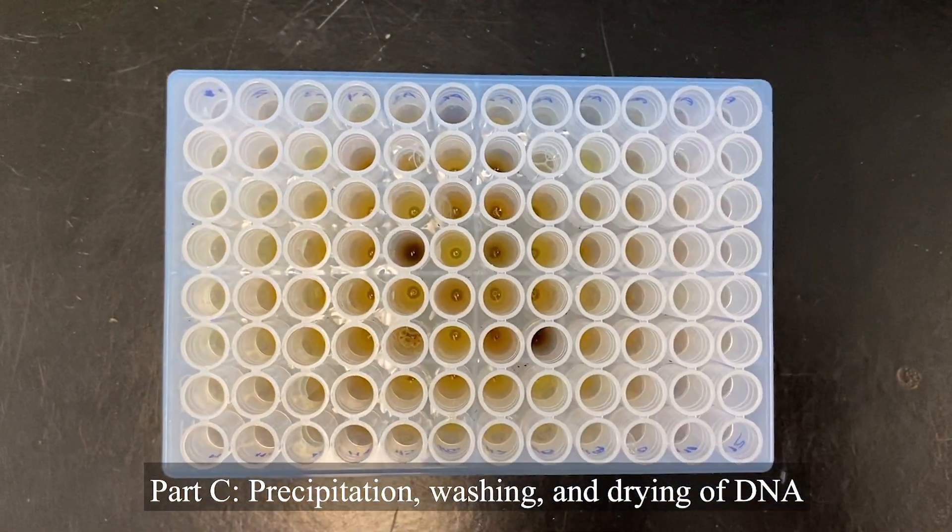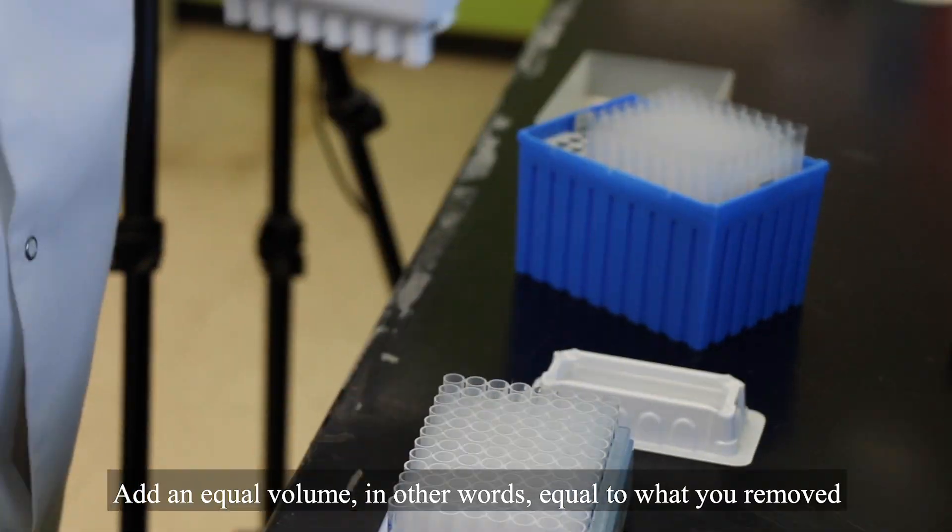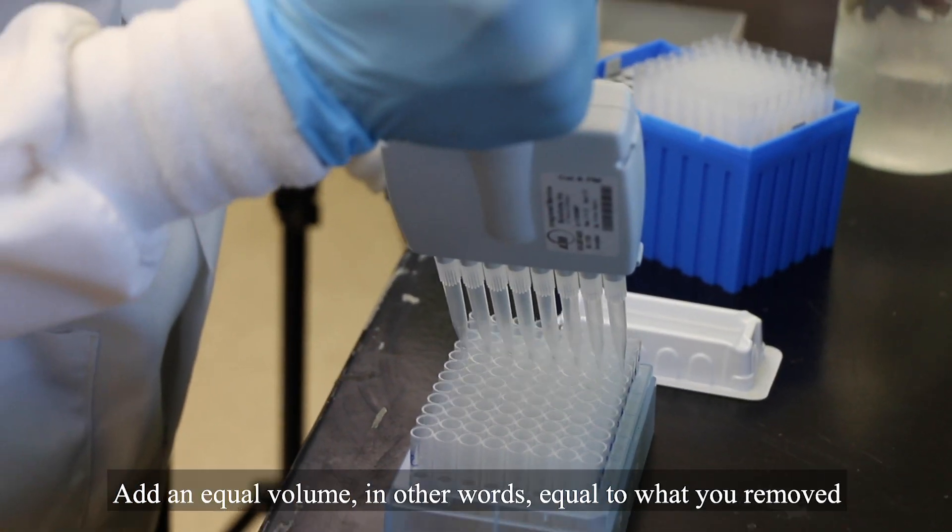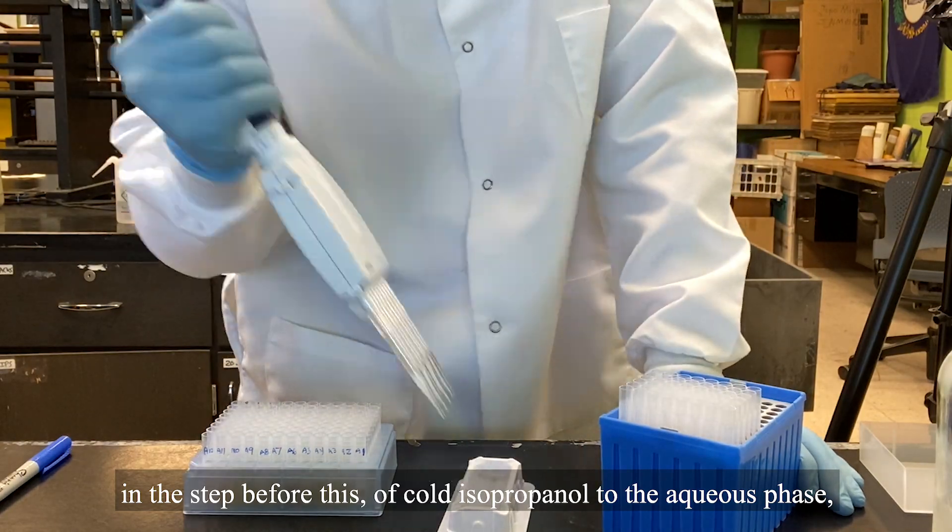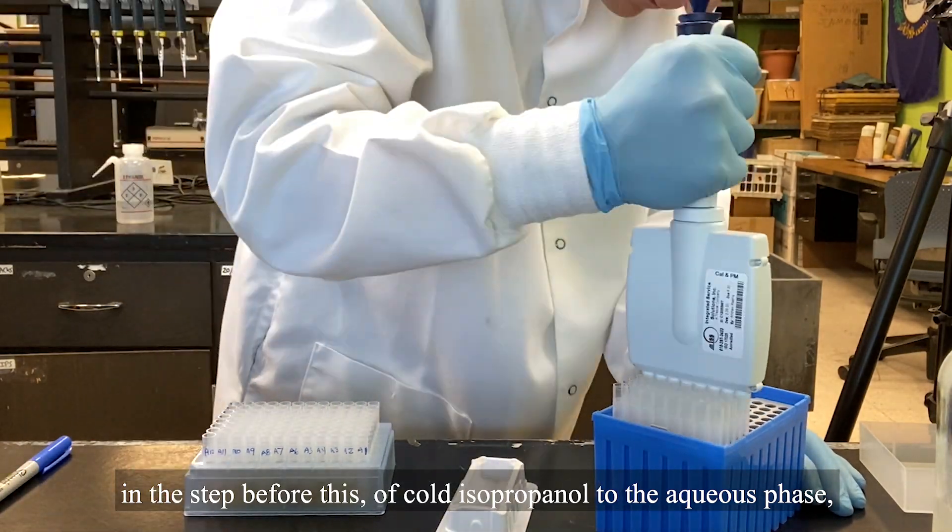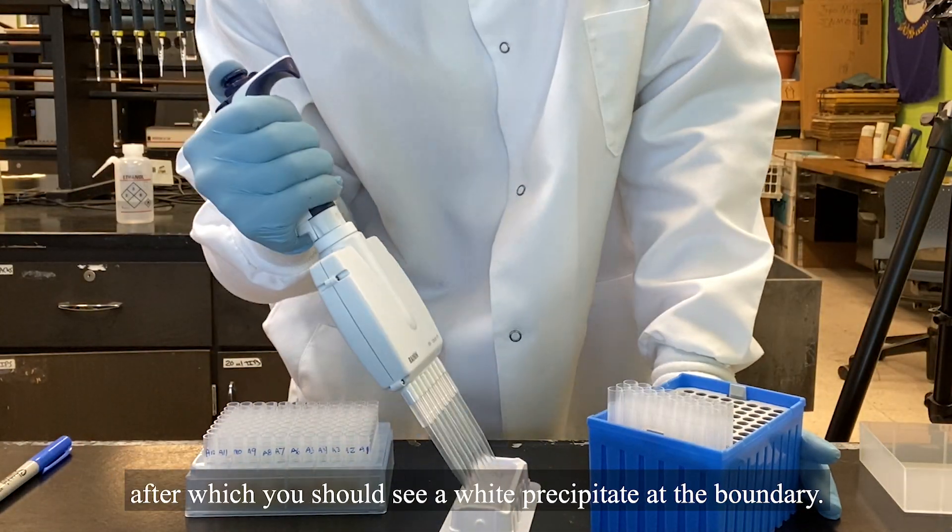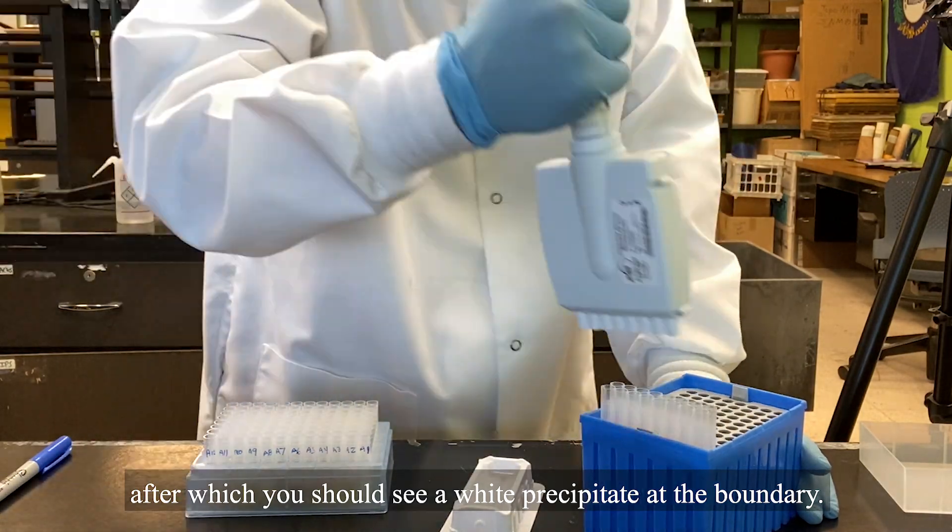Part C. Precipitation, washing, and drying of DNA. Add an equal volume, in other words, equal to what you removed in the step before this, of cold isopropanol to the aqueous phase, after which you should see a white precipitate at the boundary.